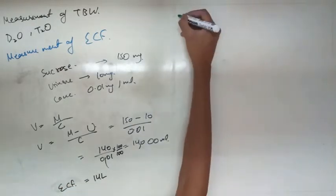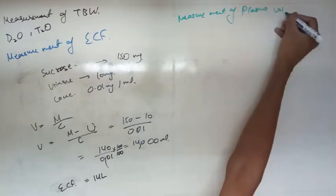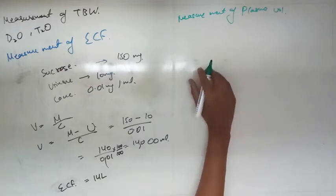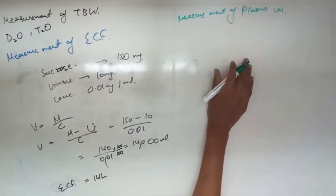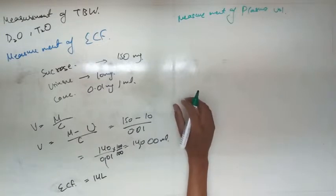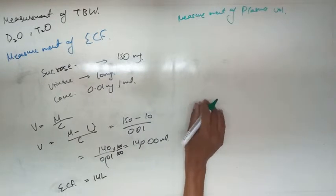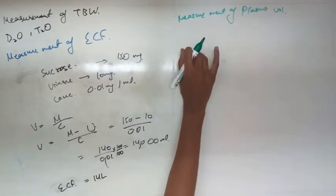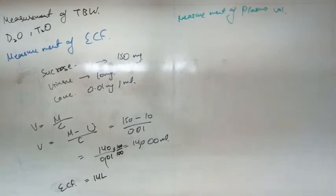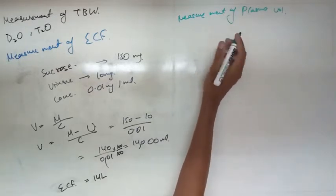Now, how do you measure plasma volume? For measurement of plasma volume, we have to use a substance that binds with plasma protein strongly and diffuses into the interstitium only in small quantities. We will cover this in detail in another video on blood volume, where we will also measure the volume of blood. So just remember: use a substance that binds with plasma protein strongly.